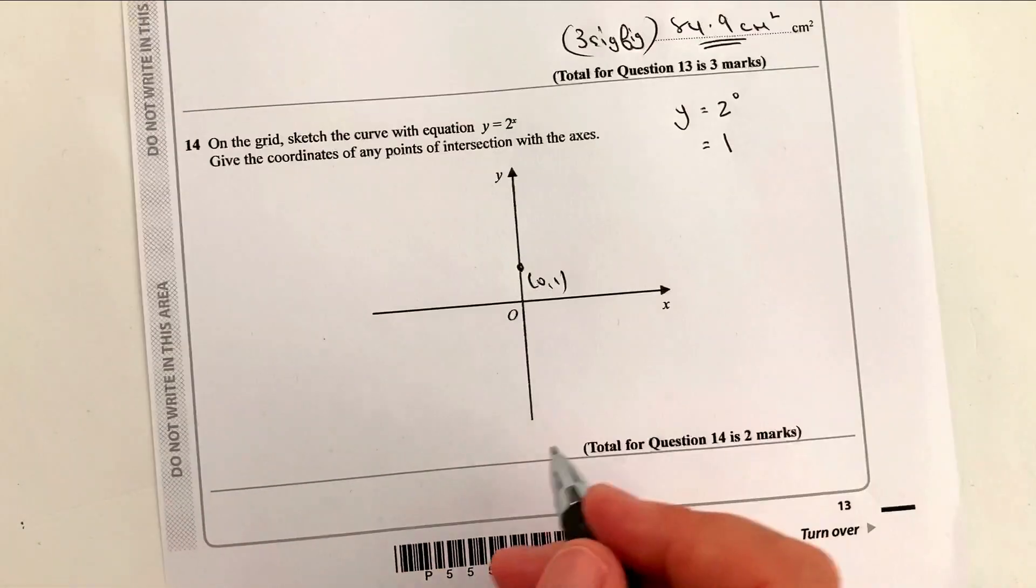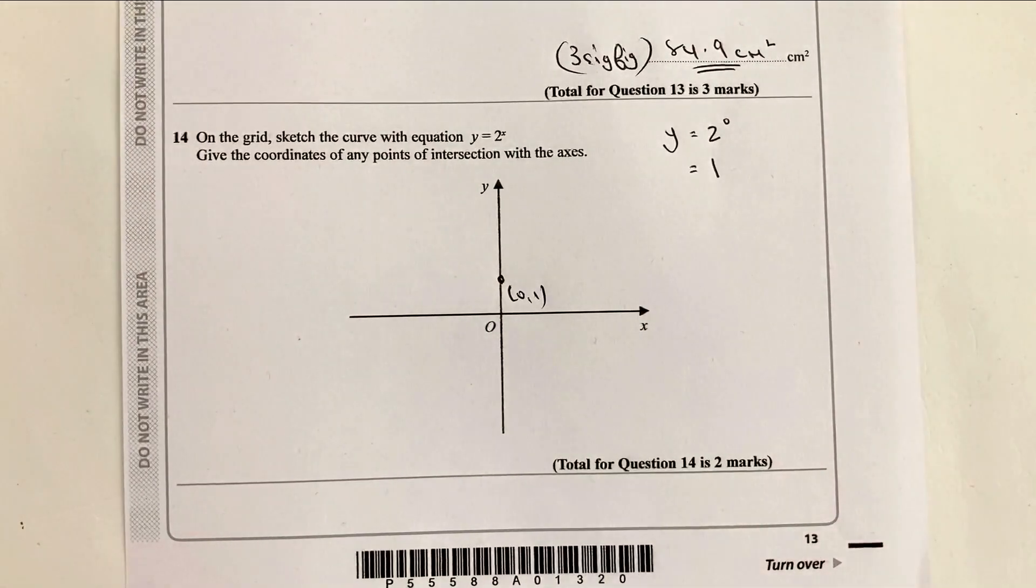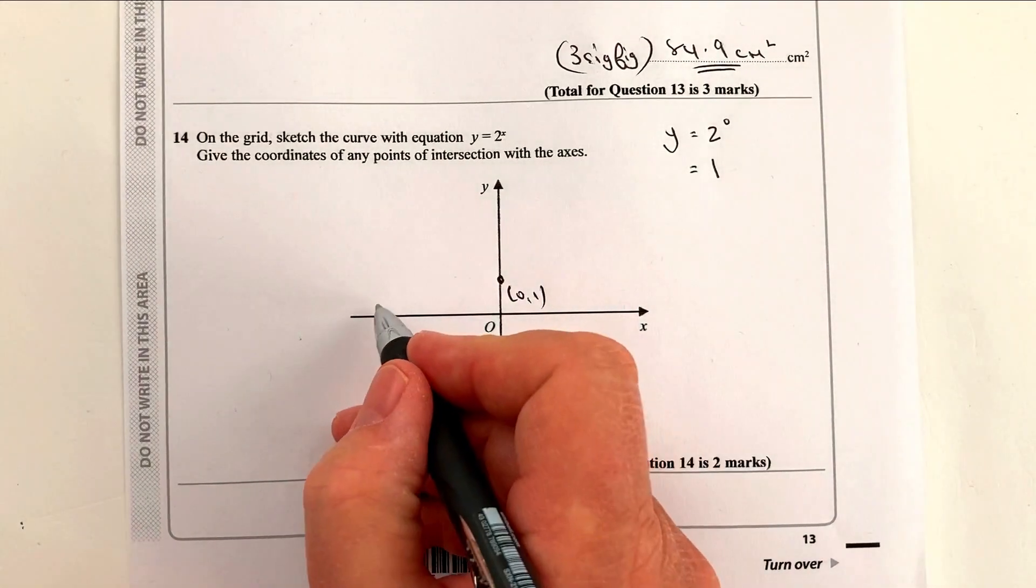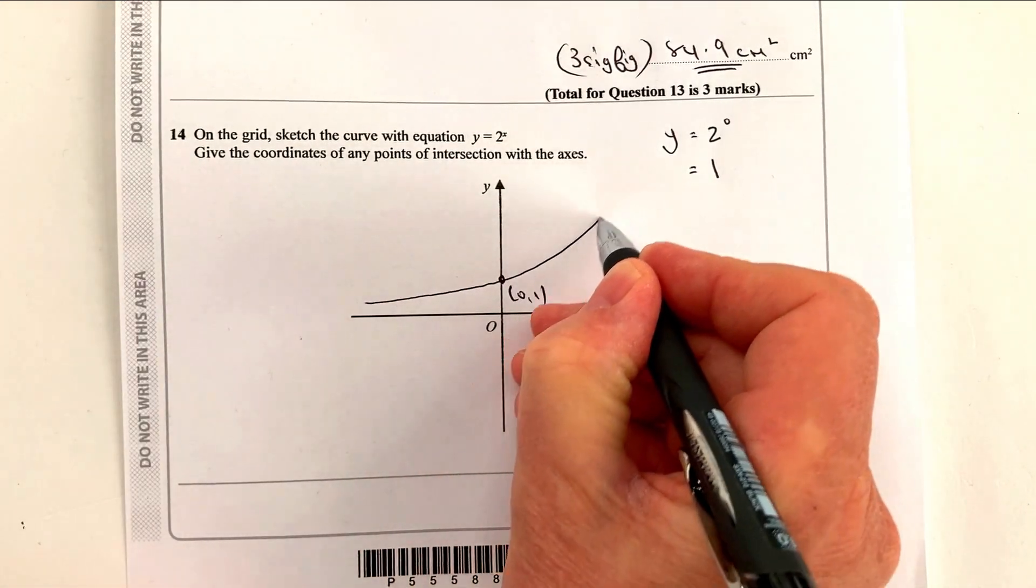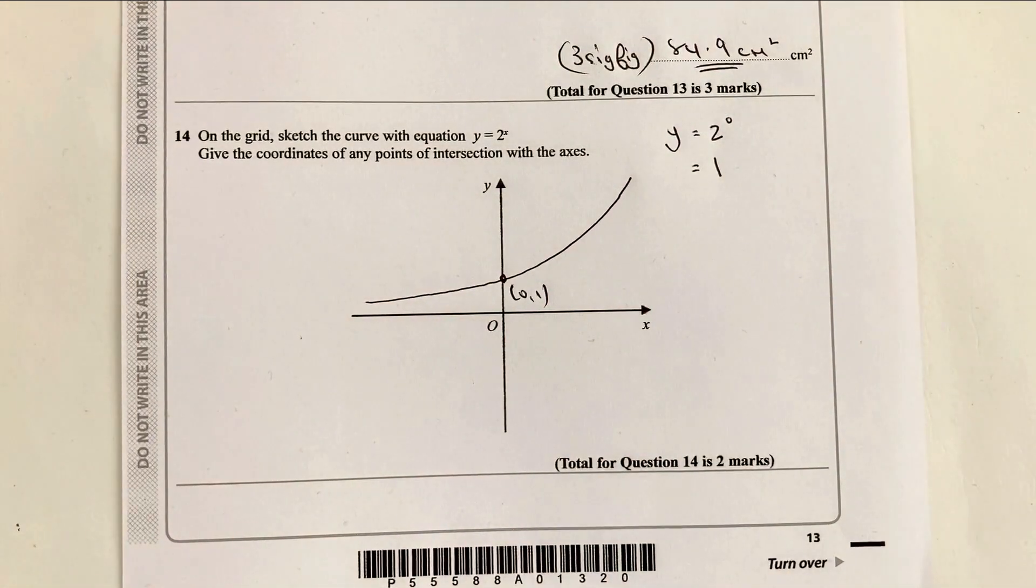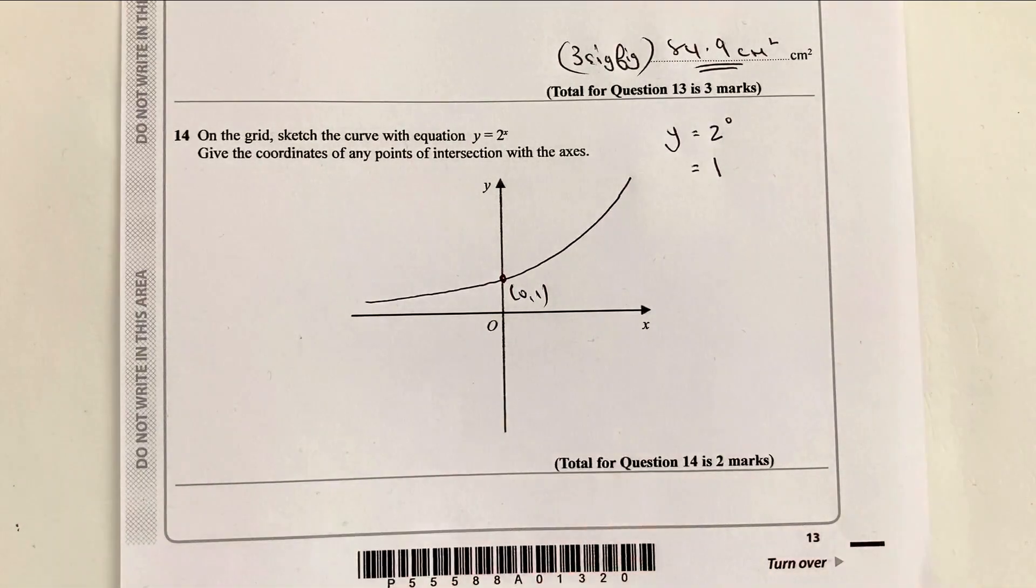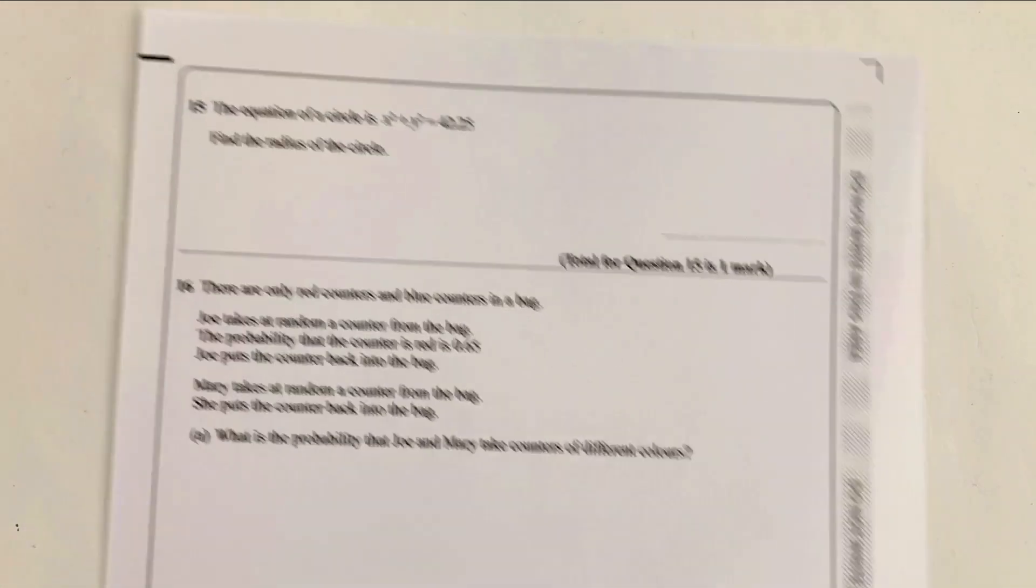And because it's one of these types of—the name has evaded me for the moment—exponential, thank you, it's an exponential graph. So that's it. It also doesn't cross the x axis, it's called an asymptote, which you'll come across in some of the higher level, particularly if you do A level. A bit of a two marker throwaway type question. But actually, these sorts of questions are very similar each time you see them.